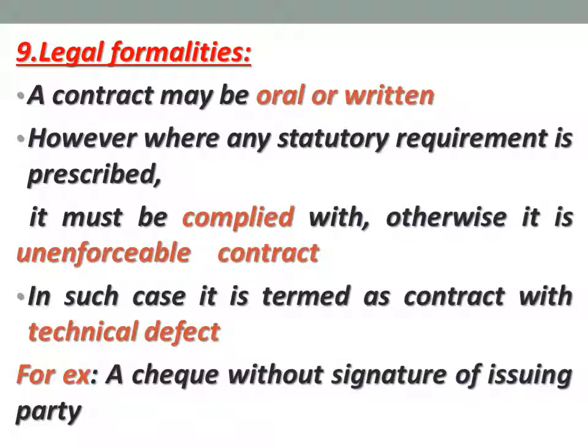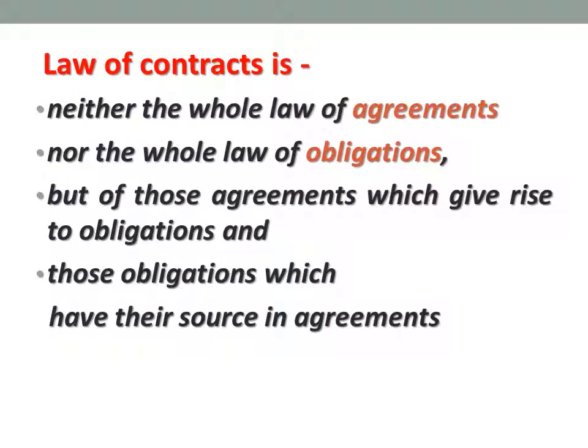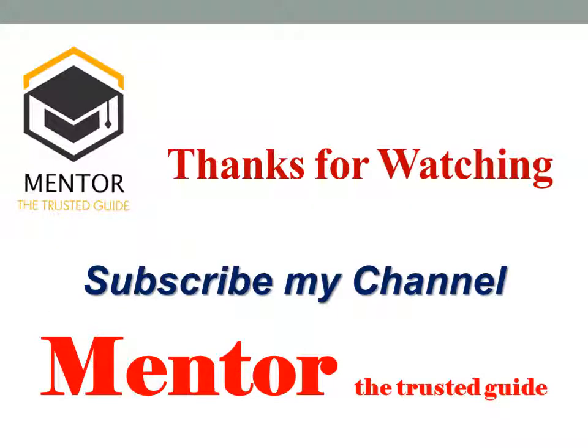Finally, from this entire discussion, what we understand is that the law of contracts is neither the whole law of agreements nor the whole law of obligations, but it is the law of those agreements which give rise to obligations and those obligations which have their source in agreements. We can conclude: all contracts are agreements, but all agreements are not contracts. Only those agreements which possess all nine essential elements would be known as a contract. Even if any one element is missing, it would not be considered a valid contract. Thank you dear friends, we will meet again in some other video with a very important topic.